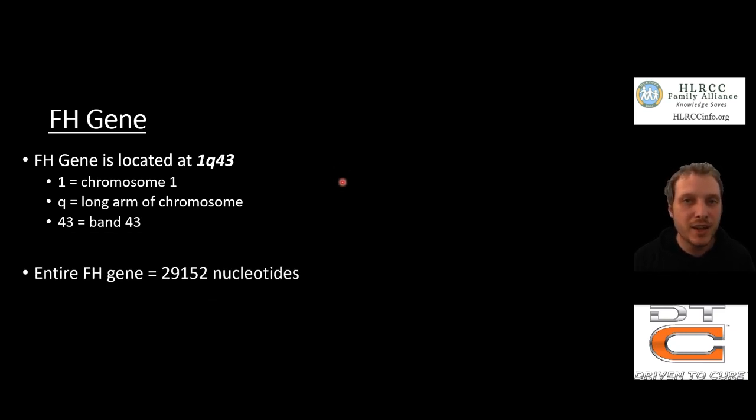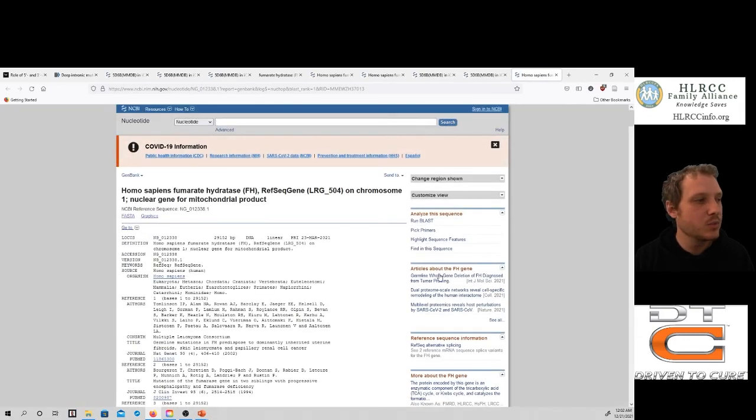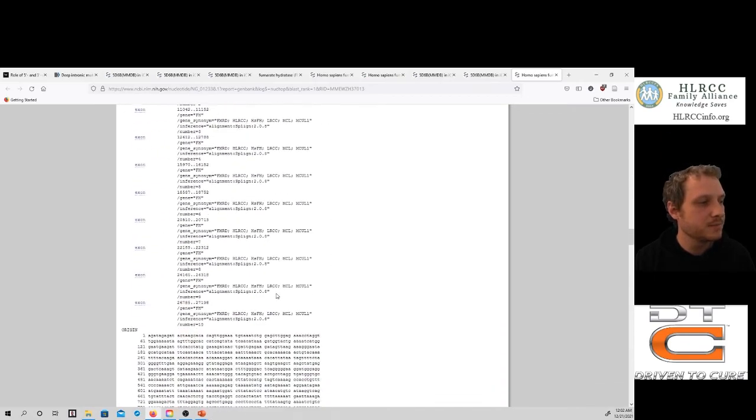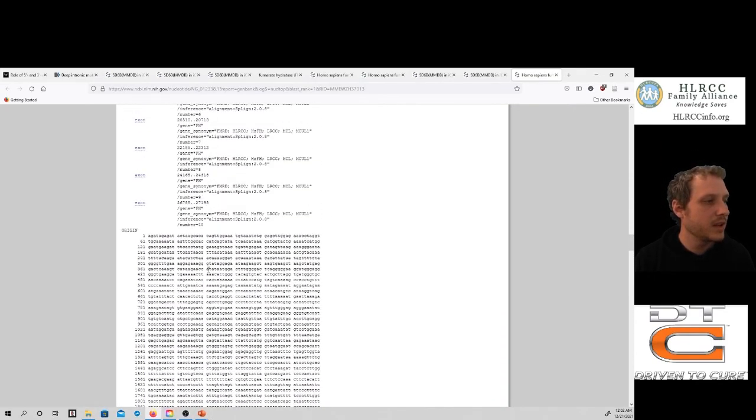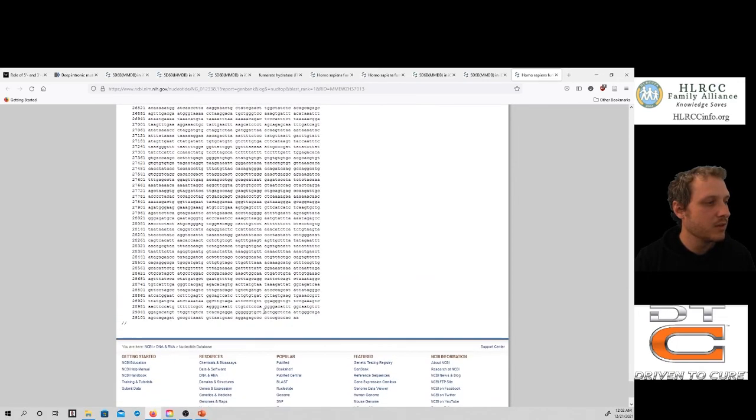All together, our FH gene is going to be 29,152 nucleotides long. Sometimes you'll see different totals for this one. It depends on where they count it before and after, but you get the general idea. What's nice is you can actually look up the entire nucleotide sequence of that gene. Here we're using the NIH website. This has all the sorts of information for it. But as you scroll down, we now have all 29,152 nucleotides. You can see all the A, G, T, C going all the way down. Right here is where it ends, just over 29,100. That's a lot of nucleotides.